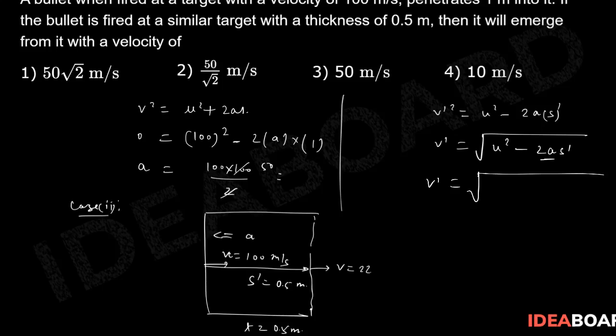So V' will be √(100² - 2 × 5 × 10³ × ½). This will be equal to √(10000 - 5000). This will be simply √5000.